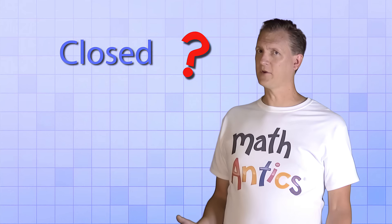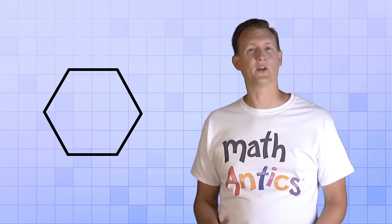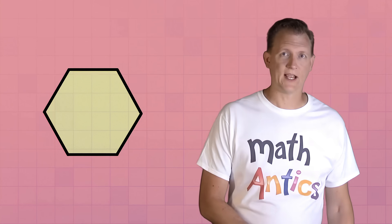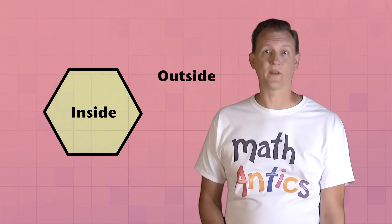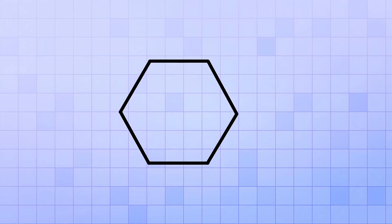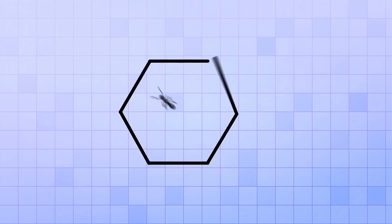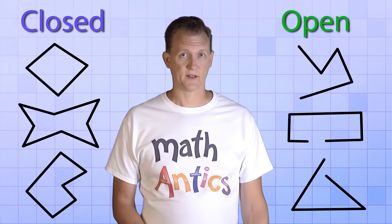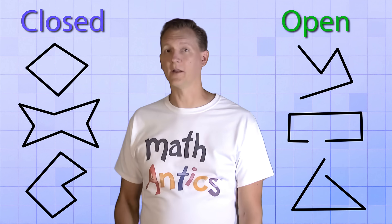The next thing we need to know about polygons is that they're closed shapes. What does it mean for a shape to be closed? Well, it means that the sides are connected so that there are no gaps. The area inside the shape is separated from the area outside the shape, and there's no way to get from the inside to the outside without crossing a line. It might help to think of a closed shape like a cage — if you put an ant inside the cage, there's no way for it to get out without crossing a line. But if the shape is open, then there is a way out. The important thing to remember is that a polygon must be closed.